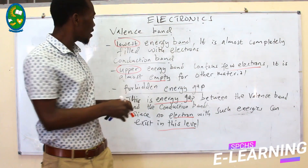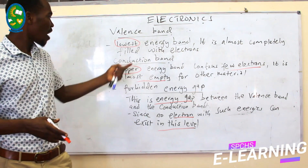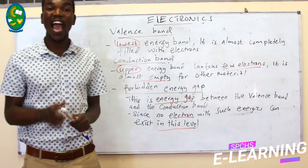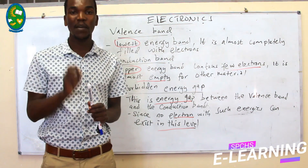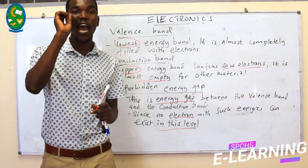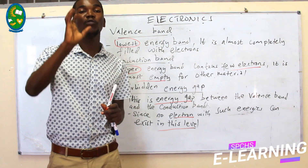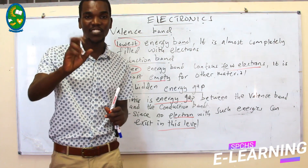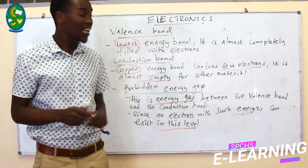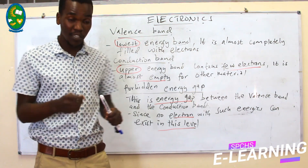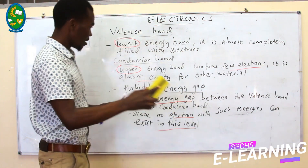These three bands — the conduction band, the valence band, and the forbidden band — are the ones which distinguish materials. They are the ones which tell us the type, whether we have conductors, insulators, or semiconductors, as it can be shown in the diagram we are going to show here.